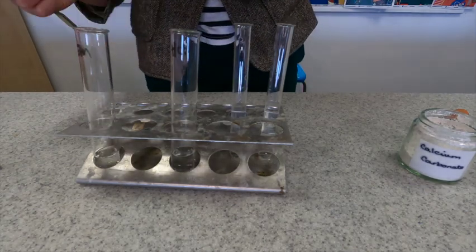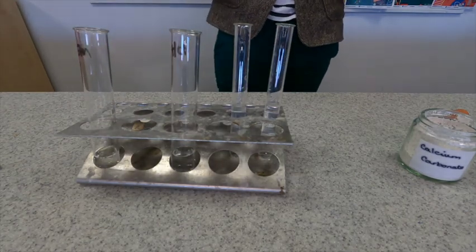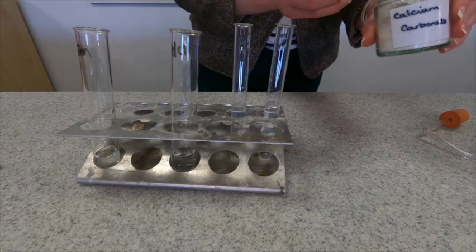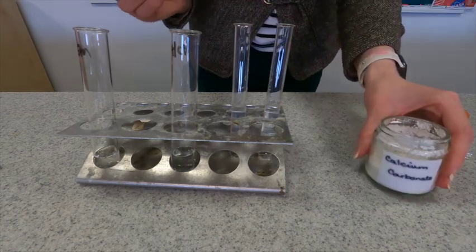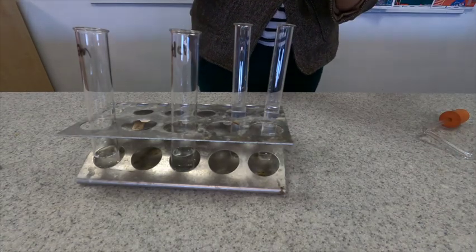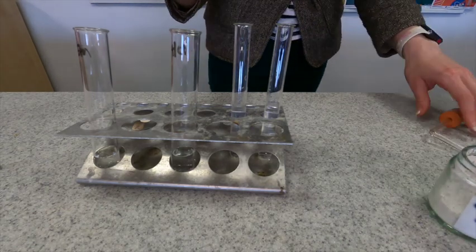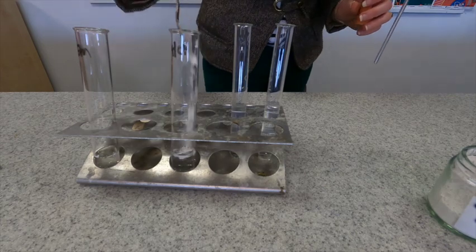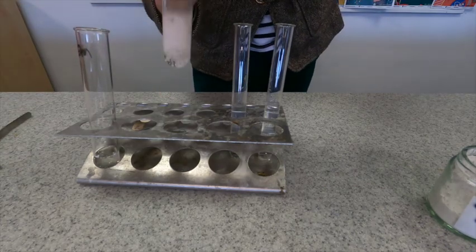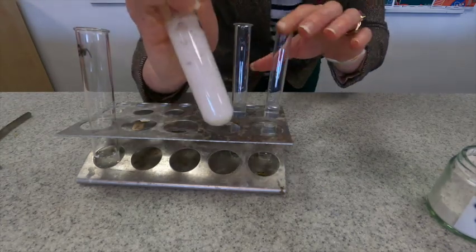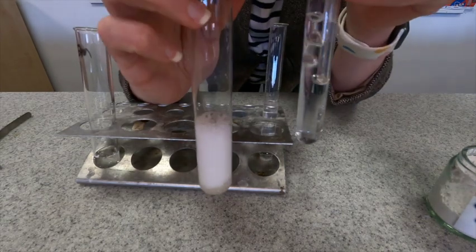Again to start us off I'm going to do hydrochloric acid. We'll have a look at the observations in the tube and also what happens with the lime water. So I'm just trying to get a spatula full in. I'm going to have to be very, very quick with this so you can see it fizzing straight away. Lots of fizzing. Let's get it into the lime water.